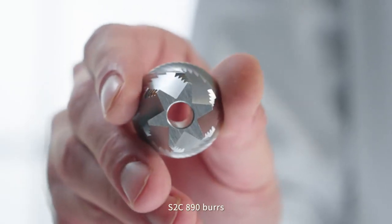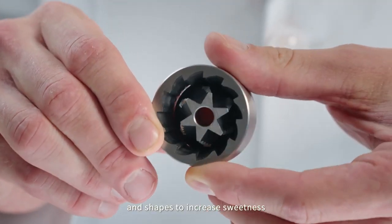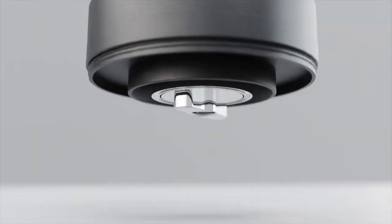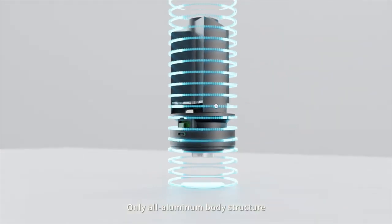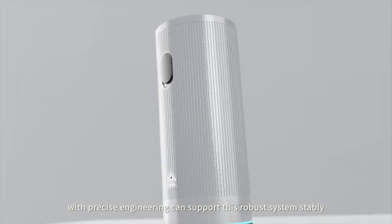S2C 890 burrs were modified for particle sizes and shapes to increase sweetness. Only an all aluminum body structure with precise engineering can support this robust system stably.